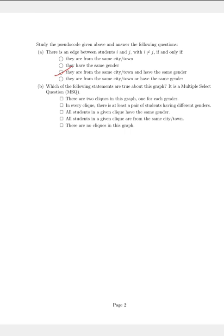In the second part of the question, which is a multiple select question, we see option 1: there are two cliques in this graph, one for each gender. That's not necessarily true because students have to be of the same gender AND the same city or town — just one condition being true does not mean they form a clique. Option 2 states that in every clique there is at least a pair of students having different genders. This is also not true, because for a clique to be formed all of the given arguments have to be satisfied.